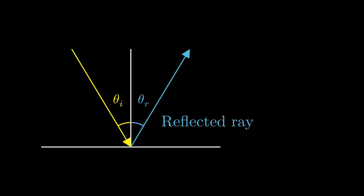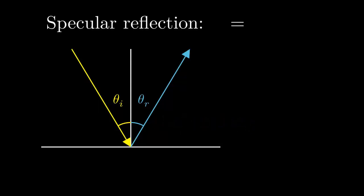Light reflecting from a perfect mirror is called specular reflection. In specular reflection, theta i is equal to theta r. There are other types of reflections, but in this video, we are only concerned with specular reflection.